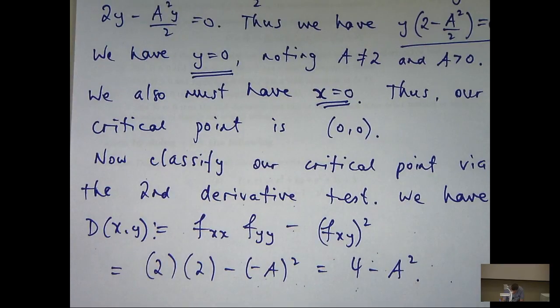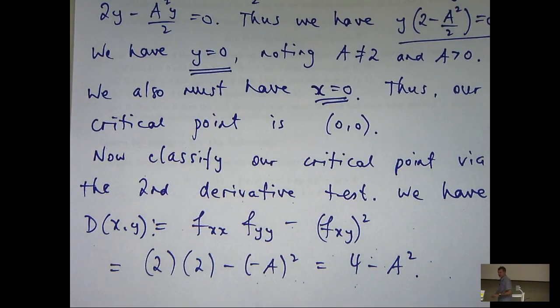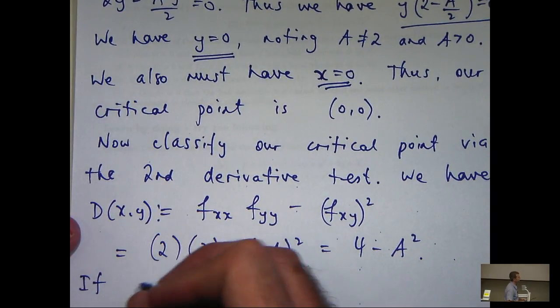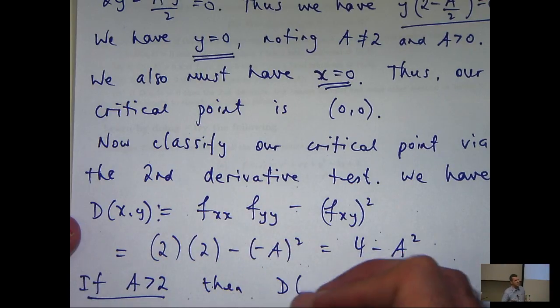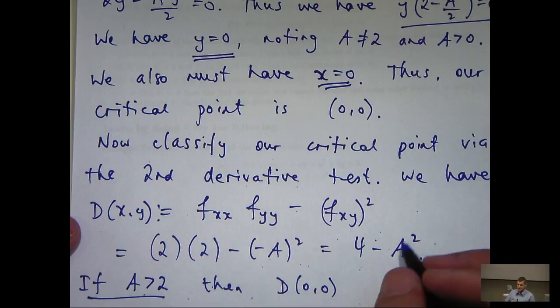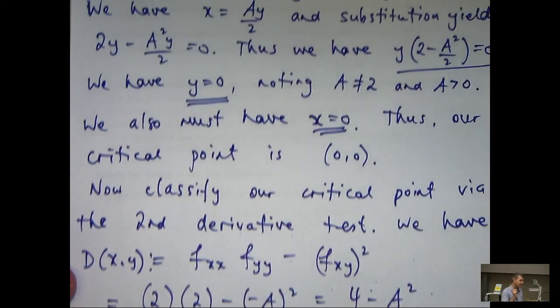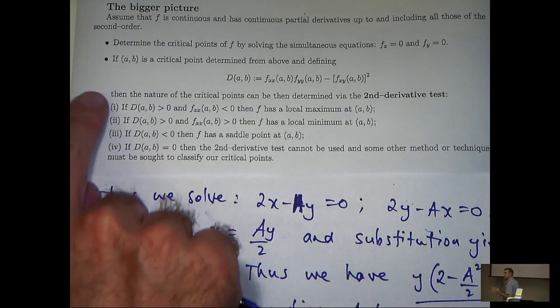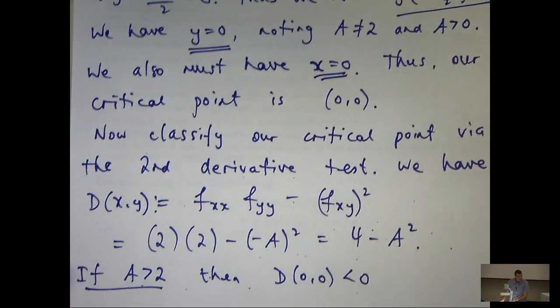So, now what we're going to have to do is split up the cases where a is strictly greater than 2 and when a is between 0 and 2. So, if a is greater than 2, this will be negative. So, let's go to our second derivative test and see if we can make some conclusion. Well, let's look down. If D is negative, then f has a saddle point.